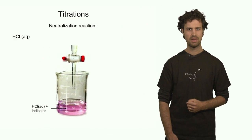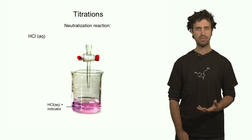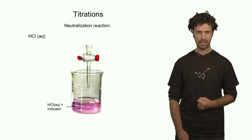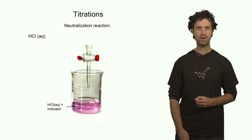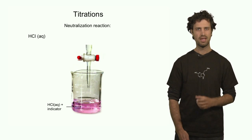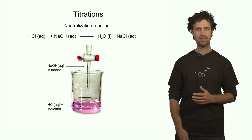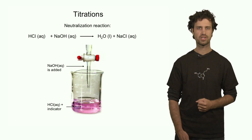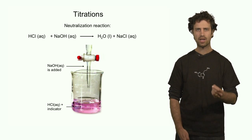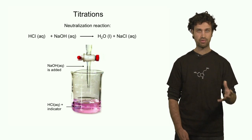Let's look at an example. Here is a solution of hydrochloric acid in a beaker. We have also added an indicator, which is a molecule that changes its color as a function of the number of protons in a solution. Above the solution we have a burette, and through the burette we are going to add a basic solution — let's say sodium hydroxide. We know if we add OH⁻ to an acidic solution, the OH⁻ and the protons will interact to form water.